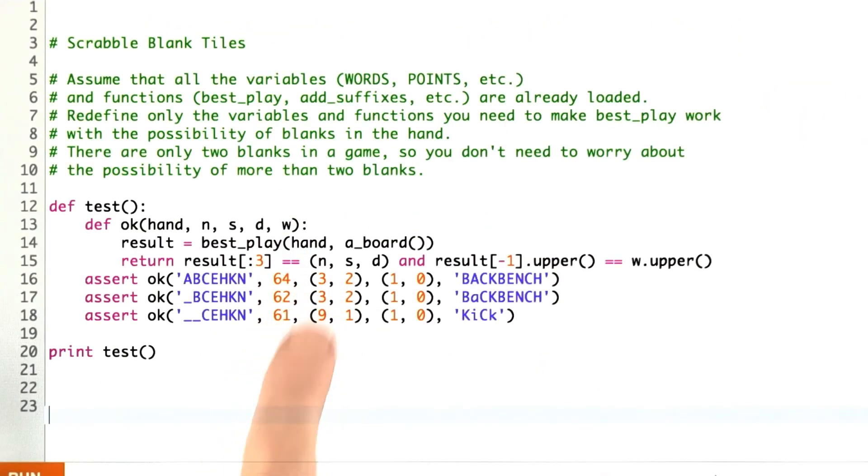Here are some examples. Here are the directions for what you should do. Assume that all the code is loaded and just write the functions and maybe updates to variables that you need, and then make sure you can pass at least these tests, but you probably should try out some additional tests of your own. So make sure that you haven't broken best_play and that it still gets the same result for the test that we did before.